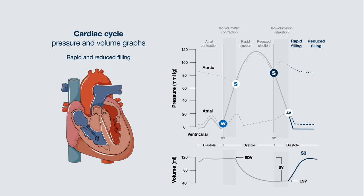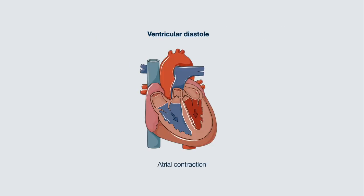This diagram is one section of the Wiggers diagram, developed by Carl J. Wiggers. The phases of the cardiac cycle can be summarized as follows.